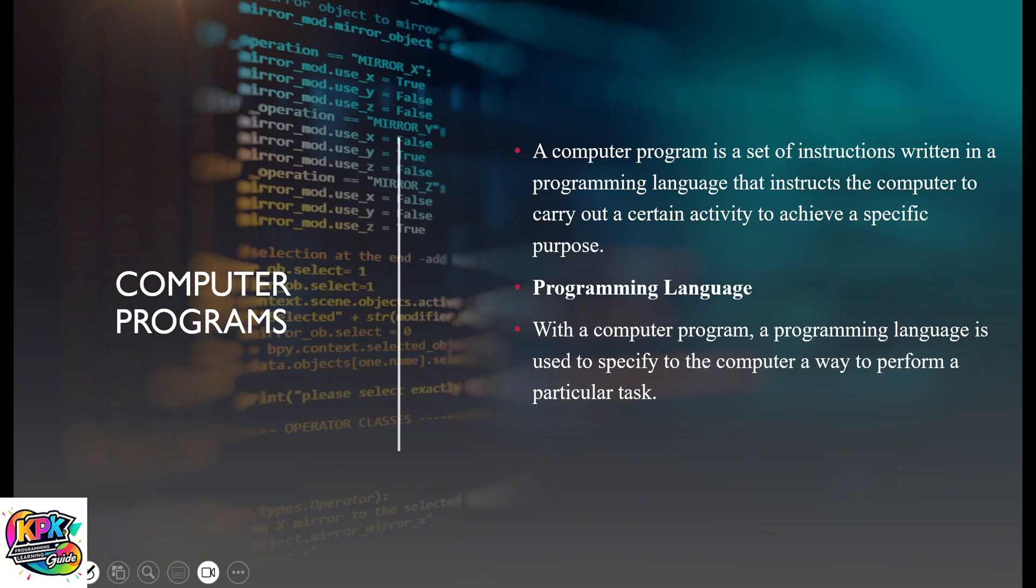So we'll start by looking at what the definition of a computer program is. We've already established that in our previous videos, but let's take a quick look. A computer program is a set of instructions written in a programming language that instructs the computer to carry out a certain activity to achieve a specific purpose.